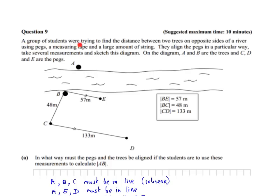So I'll start off with this one. It says a group of students were trying to find the distance between two trees on opposite sides of a river using pegs, a measuring tape and a large amount of string. They align the pegs in a particular way, take several measurements and sketch this diagram. On the diagram, A and B are the trees and C and D and E are the pegs. Now, in what way must the pegs and the trees be aligned if the students are to use these measurements to calculate the length of AB? So I want to calculate the length of AB. And the question is asking us, in what way must the trees and the pegs be aligned for us to be able to calculate the length of AB?